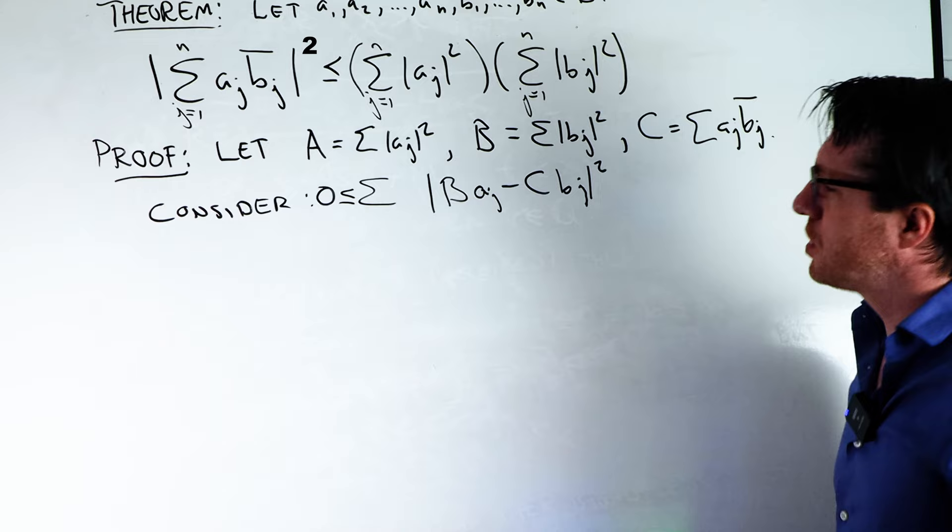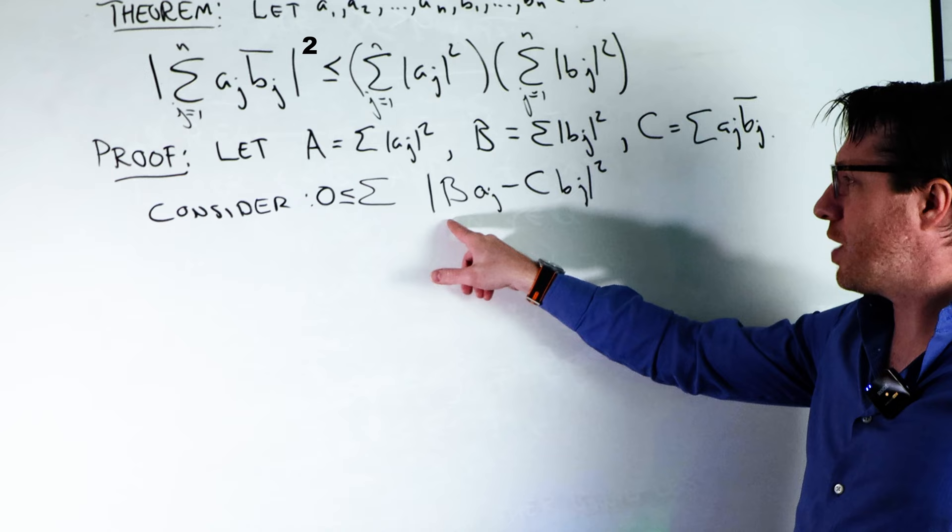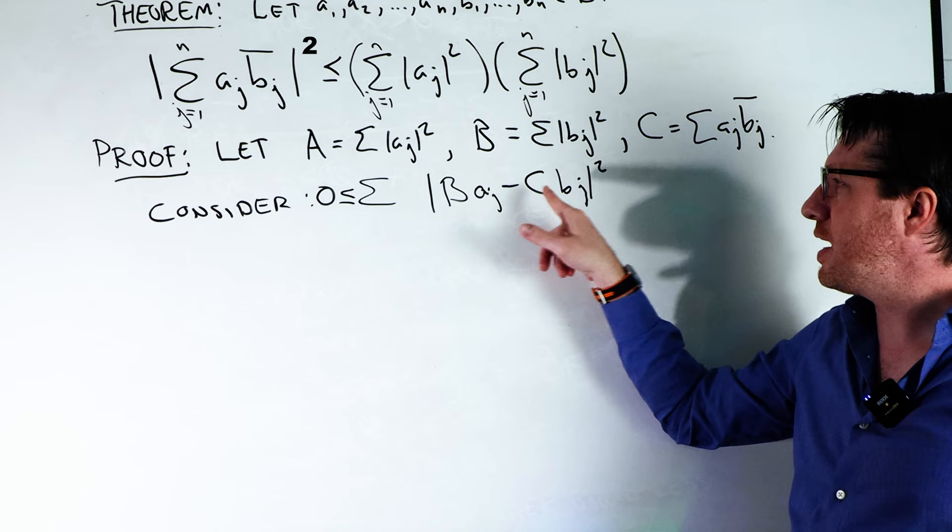I'm setting A to be the sum of |a_j|^2, and B to be the sum of |b_j|^2, and C to be this term on the left without the absolute values. What I'm going to do is make this sum: the sum of |Ba_j - Cb_j|^2.